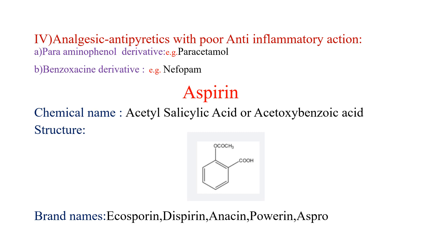Aspirin chemical name: acetylsalicylic acid, also known as acetoxybenzoic acid. Brand names: Ecosprin, Disprin, Anacin, Powerin, Aspirin.